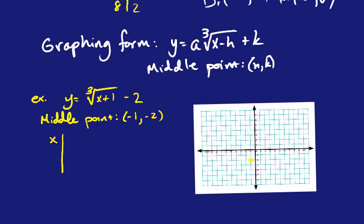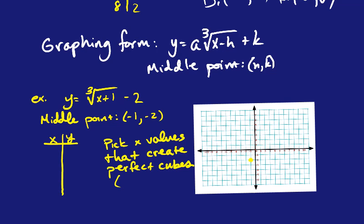And the way that you get those 4 other points in your table is you want to pick x values that create perfect cubes. And to make your life easier, the perfect cubes you should be trying to create are negative 8, negative 1, 1, and 8. That way it'll fit easily on the graph. So if you think about what number could I plug in for x here in order to get negative 8? That x would be negative 9, because negative 9 plus 1 is negative 8. What could I plug in for x to get negative 1? That'd be negative 2. What would I plug in for x to get 1? That'd be 0. And what could I plug in for x to get 8? That'd be 7, because 7 plus 1 is 8.